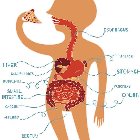The waste products of digestion are defecated from the rectum via the anus. The organs known as the accessory digestive organs are the liver, gallbladder, and pancreas. Other components include the mouth, salivary glands, tongue, teeth, and epiglottis.